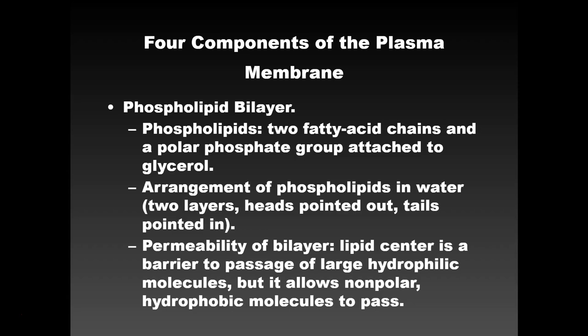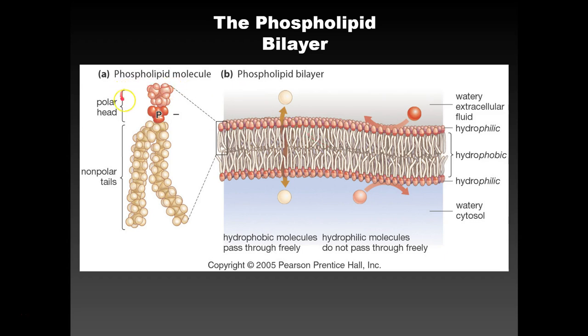We need to talk about the permeability of the plasma membrane. The lipid center prevents things from getting in — it prevents large molecules and hydrophilic molecules because it's hydrophobic. But it allows nonpolar and small molecules to pass through. This bilayer region is preventing most things from getting in or out. It's like ricocheting them off — things the cell wants to keep inside can't get out, and most stuff can't go in or out.